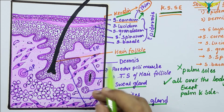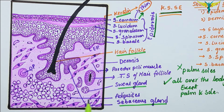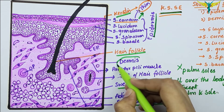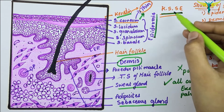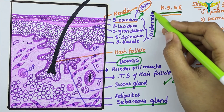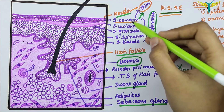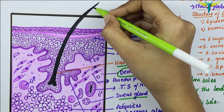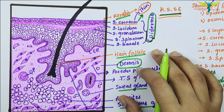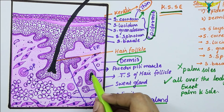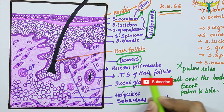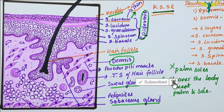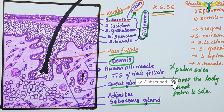Adipocytes are present in the thin skin, and the erector pili muscles are present, which are helpful in the erection of the hair follicle. This part is the dermis and this part is the epidermis with its five layers. This is the longitudinal section of the hair follicle, whereas this is the transverse section. This is all about the histology of the thin or hairy skin.